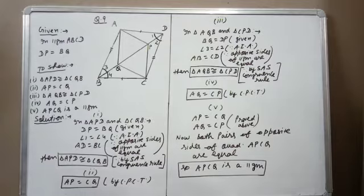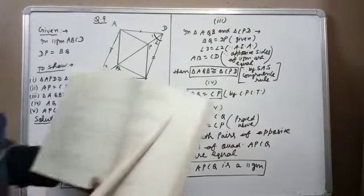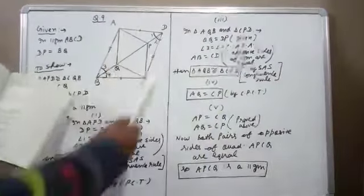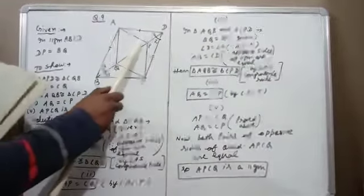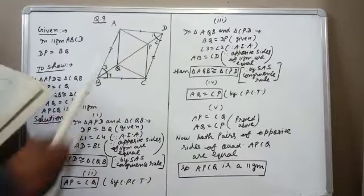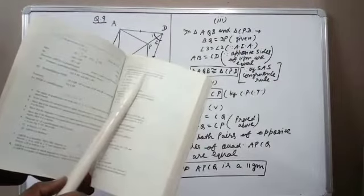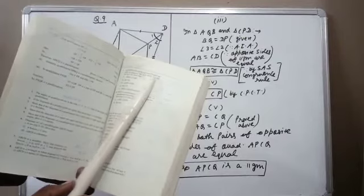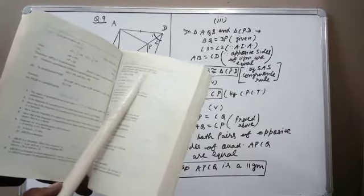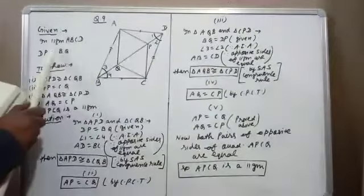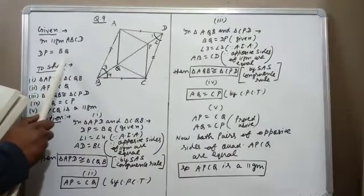Now question number 9 — in this question the figure is already given. We will label the angles 1, 2, 3, 4 to make the question easier. Given: parallelogram ABCD with two points P and Q taken on diagonal BD such that DP equals BQ.